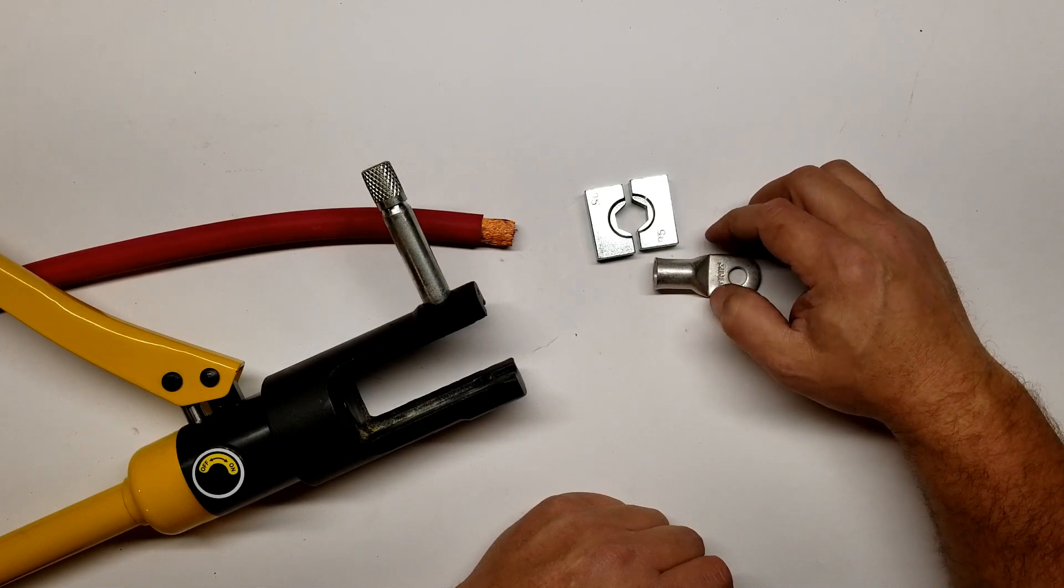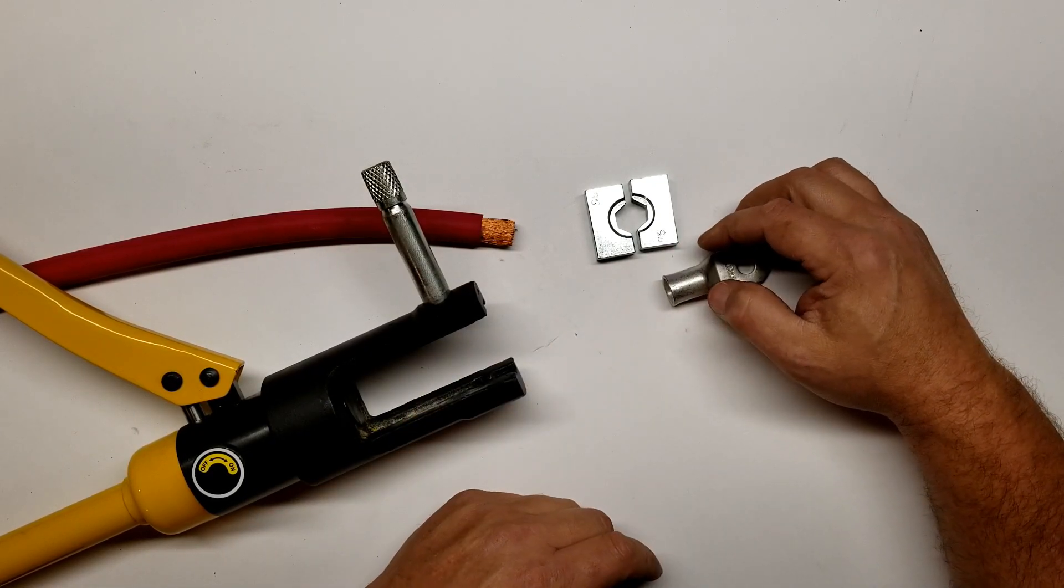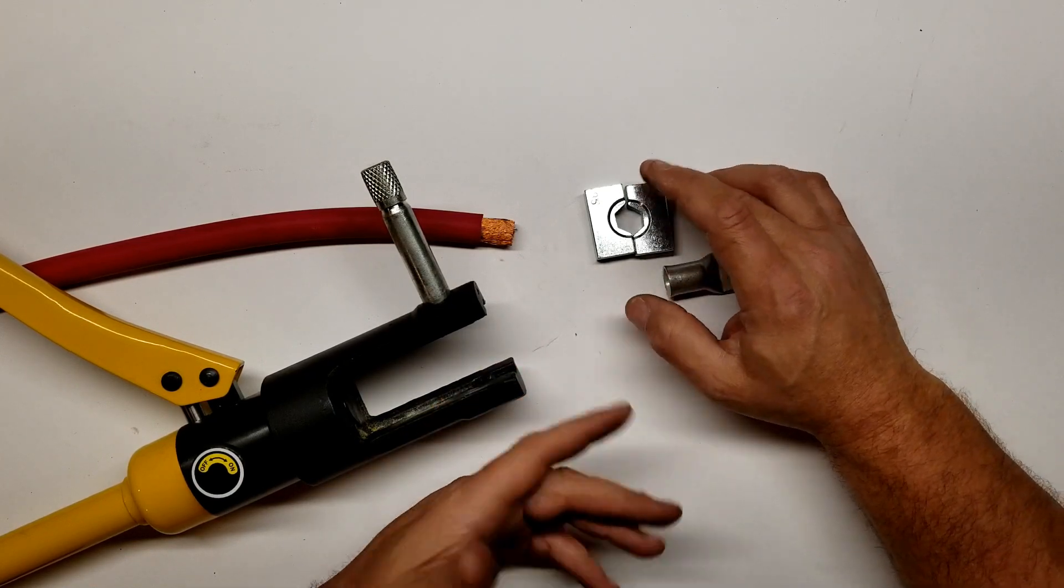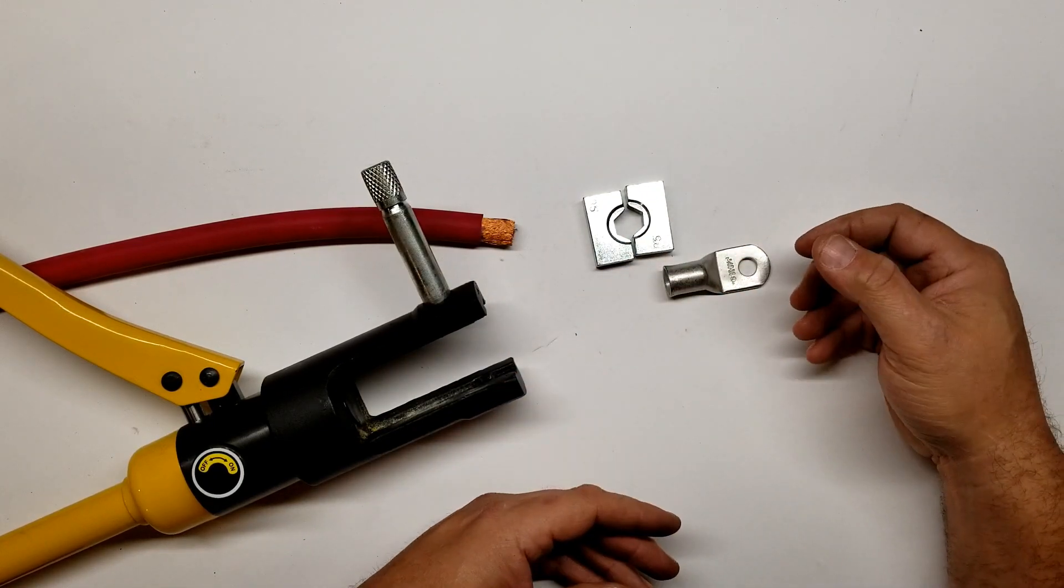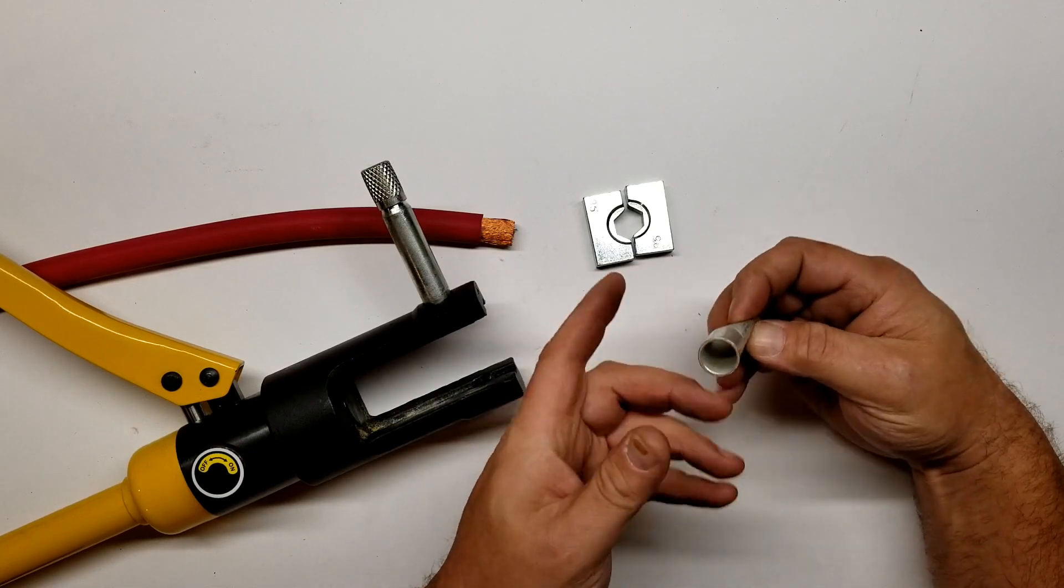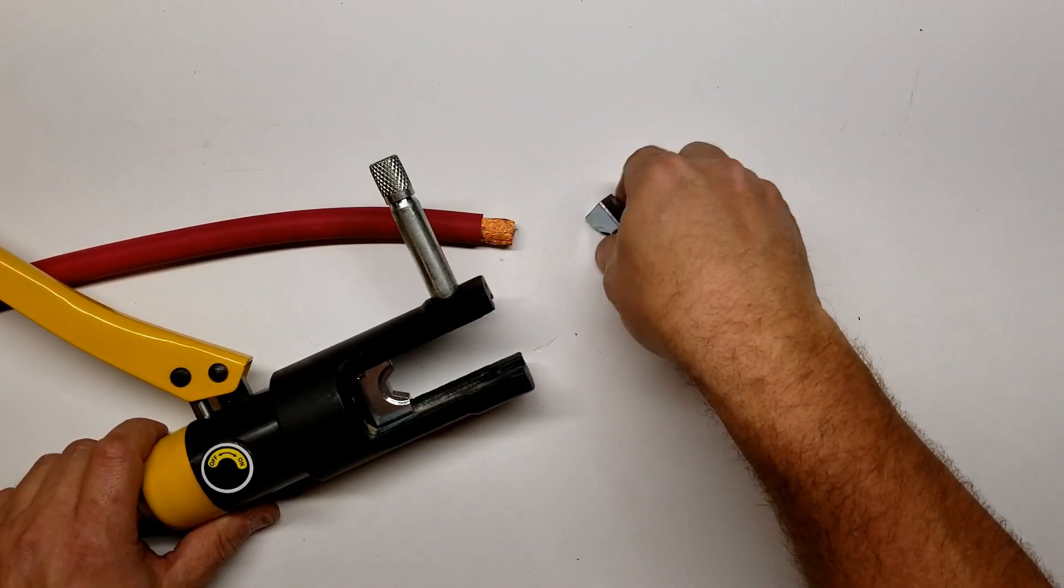Back when we were building that big jump starter, we found the 95 dies seemed to work best with our cable and our fittings. I saw some other videos where a guy was using the 120 dies with 4 odd cable and that was working for him. But 120 dies with this setup from this manufacturer don't even hardly crimp down on this at all. So with our setup we're using the 95 dies.